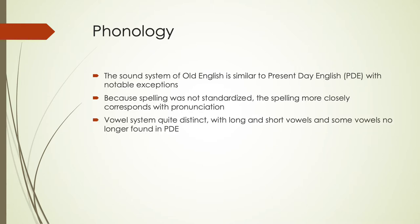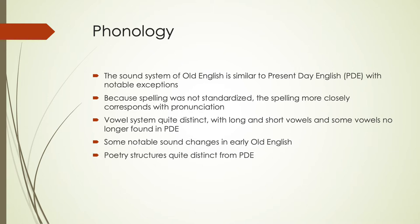You'll notice that the vowel system, compared to some of the sounds we'll see in consonants, is quite distinct. Old English did have long and short vowels, something we no longer have. There are also a couple of vowels that are no longer found in present-day English, and we'll talk about that. There are some notable sound changes that happened early on in Old English that have affected some features of English pretty profoundly.